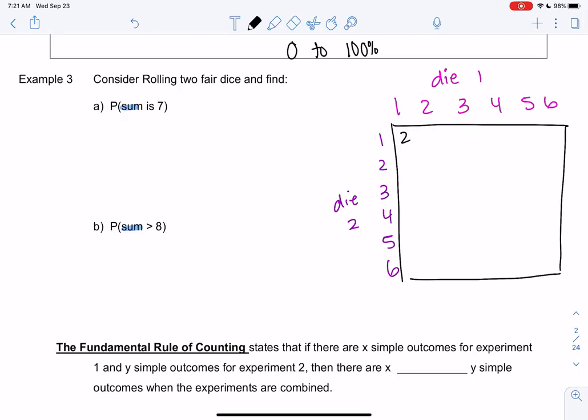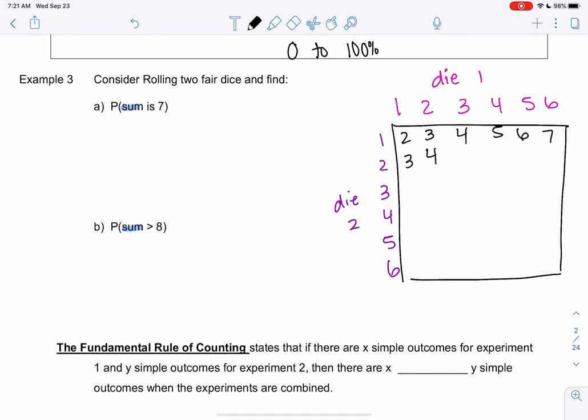A 1 and a 2 would be a sum of 3. 1 and 3 would be a sum of 4. So hopefully we see the pattern. 2 plus 2 is 4. Sorry, I was in the wrong spot. So start filling it out.